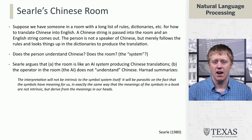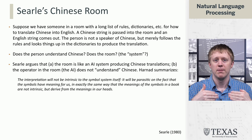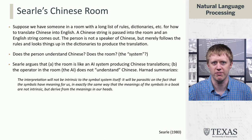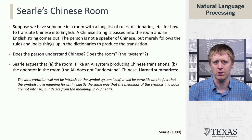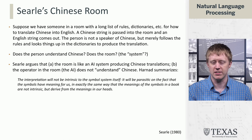Harnad has a riff on this, arguing that the reason we think some sort of understanding is happening is entirely projected from ourselves. He says the interpretation will not be intrinsic to the symbol system itself — it will be parasitic on the fact that the symbols have meaning for us, in exactly the same way that the meaning of symbols in a book are not intrinsic, but derived from the meanings in our heads. So basically, we think understanding is going on because we see the translation process, but in fact no such understanding is happening.